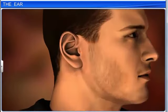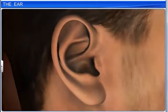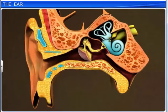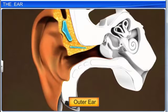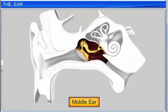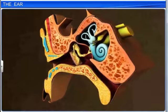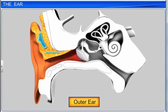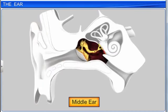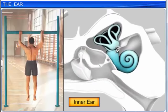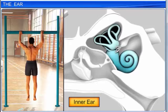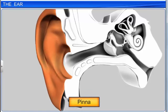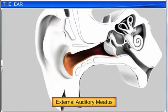The ear is an important organ that not only assists in hearing but also helps the body maintain balance. It can be divided into three sections. The outer ear comprises a funnel-like structure called the pinna and an S-shaped tube called the external auditory meatus.